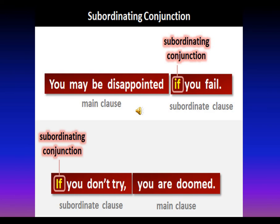In the second example, the subordinate clause comes first: 'If you don't try, you are doomed.' The phrase 'if you don't try' cannot stand on its own — it needs support. But 'you are doomed' is a complete sentence and is the main clause. So if you think conjunctions can only be used in the middle of sentences, you are wrong — they can appear at the very beginning as well.